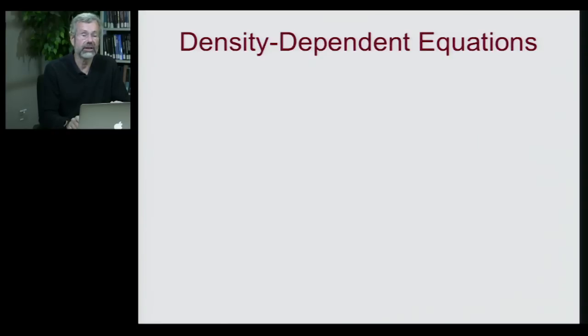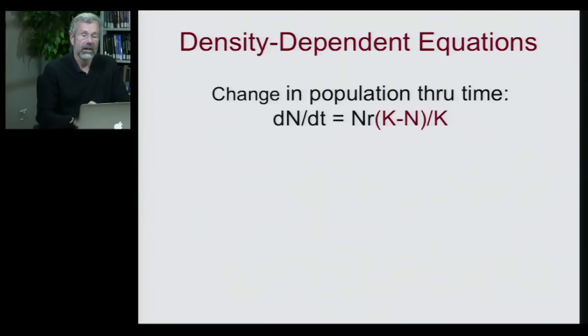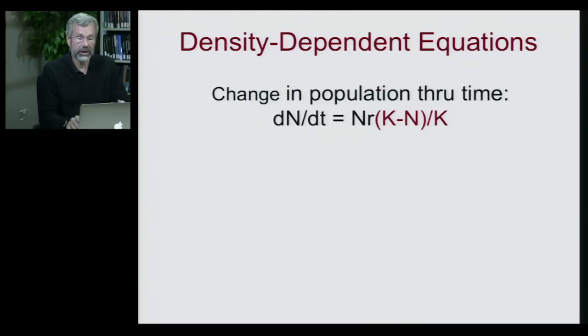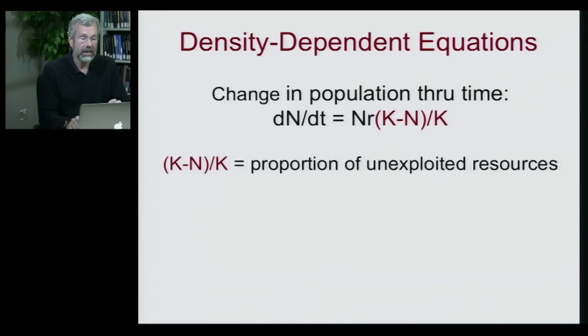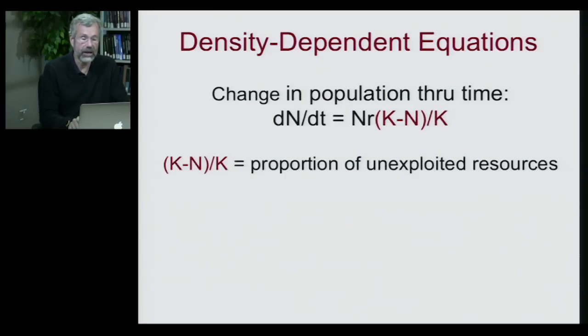As population ecologists, we want to predict rates of population growth, and we recognize that we have to have a more complex view of populations. We need to be using density-dependent equations. What we'll be looking at is how the population changes through time — dn/dt — described as n, our population size, times r, the intrinsic growth rate, times (K minus n) divided by K. This (K minus n)/K term is a simple algebraic representation of the proportion of resources that have not yet been used up or consumed by our population.